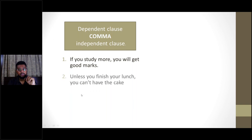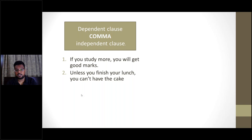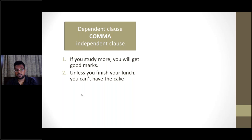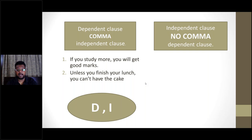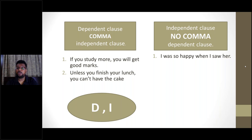More examples: 'Unless you finish your lunch' is a dependent clause. 'You can't have the cake' is independent. So we have dependent and independent — place a comma in between. Now if we have an independent clause followed by a dependent clause — that is vice versa — no comma in between. Example: 'I was so happy when I saw her.' 'I was so happy' is independent; 'when I saw her' is dependent. Independent first, dependent later — no comma.